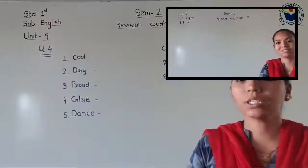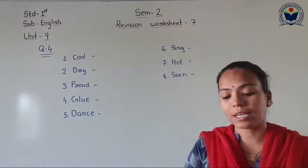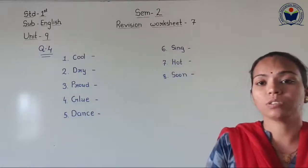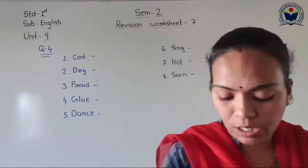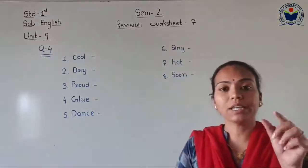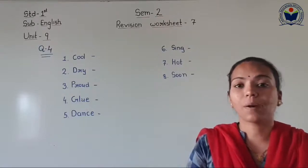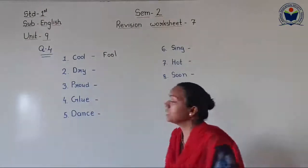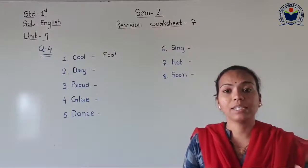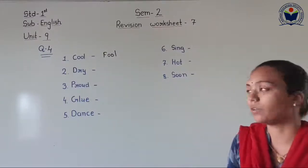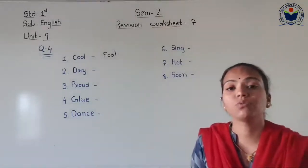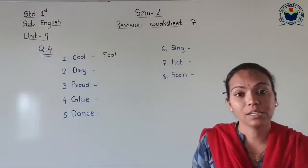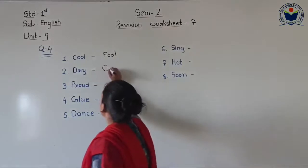Question number 4: Write one word that rhymes with the given word. Number 1 is C-O-O-L, cool — find a rhyming word. For example, you can write F-O-O-L, fool. Next is D-R-Y, dry — find a word with the same '-ry' ending. You can write C-R-Y, cry. C-R-Y, cry.